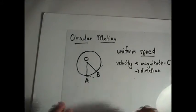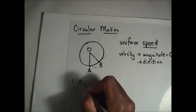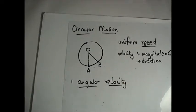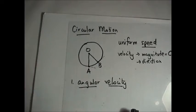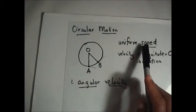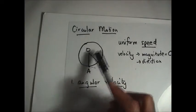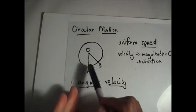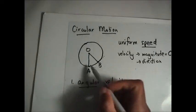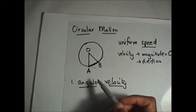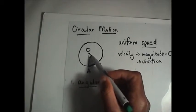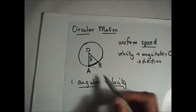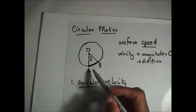We'll get into that when we talk about acceleration in circular motion. The first part we want to discuss is angular velocity. We are considering uniform speed with the direction changing due to circular motion around fixed point O. When the object moves from A to B along arc AB, the radius OA moves through an angle theta in the same time the object takes to move from A to B.